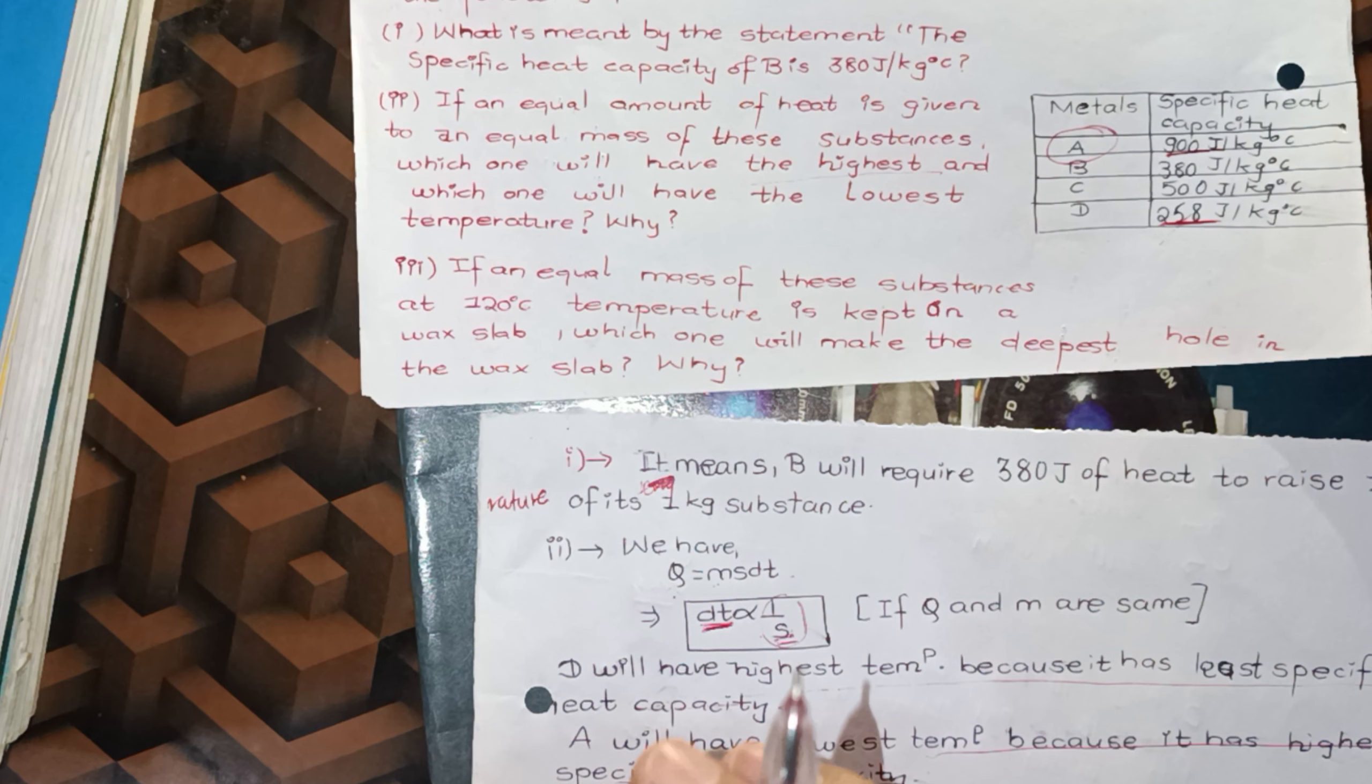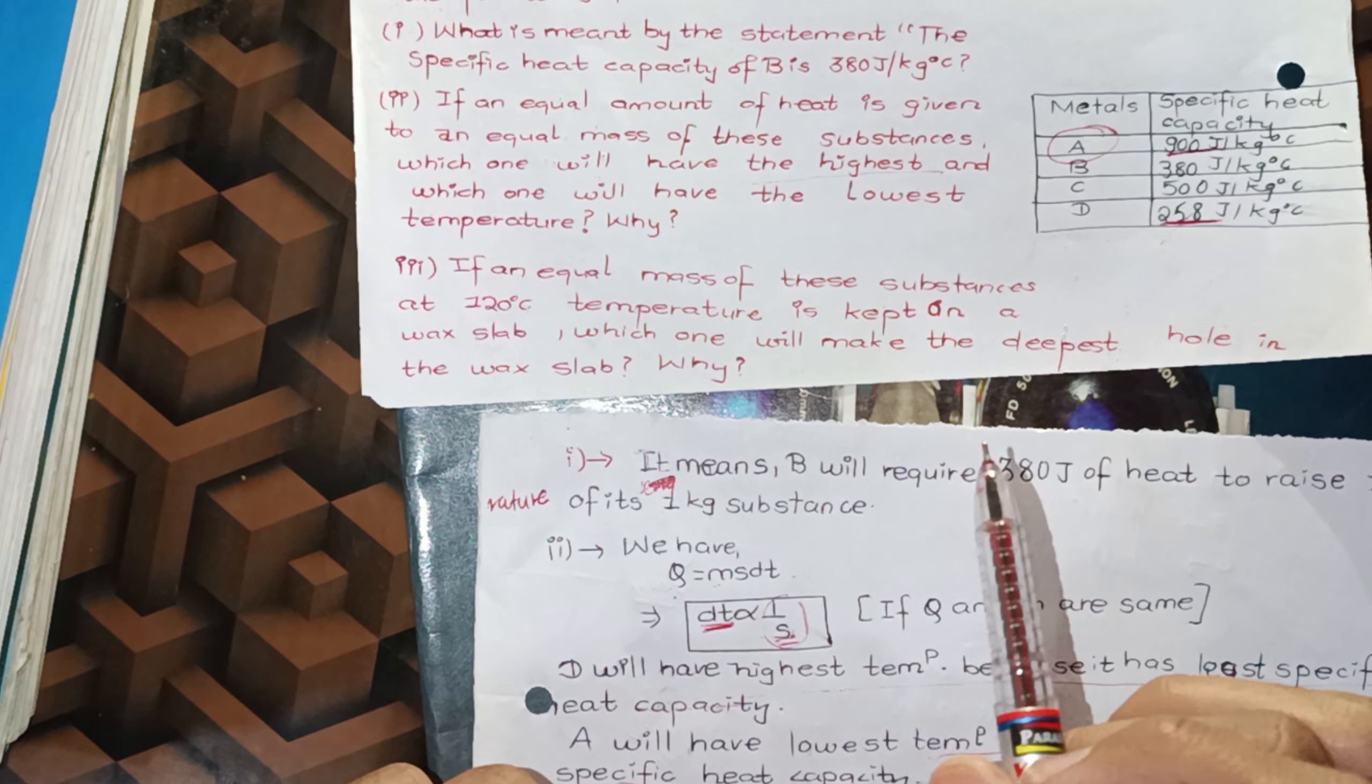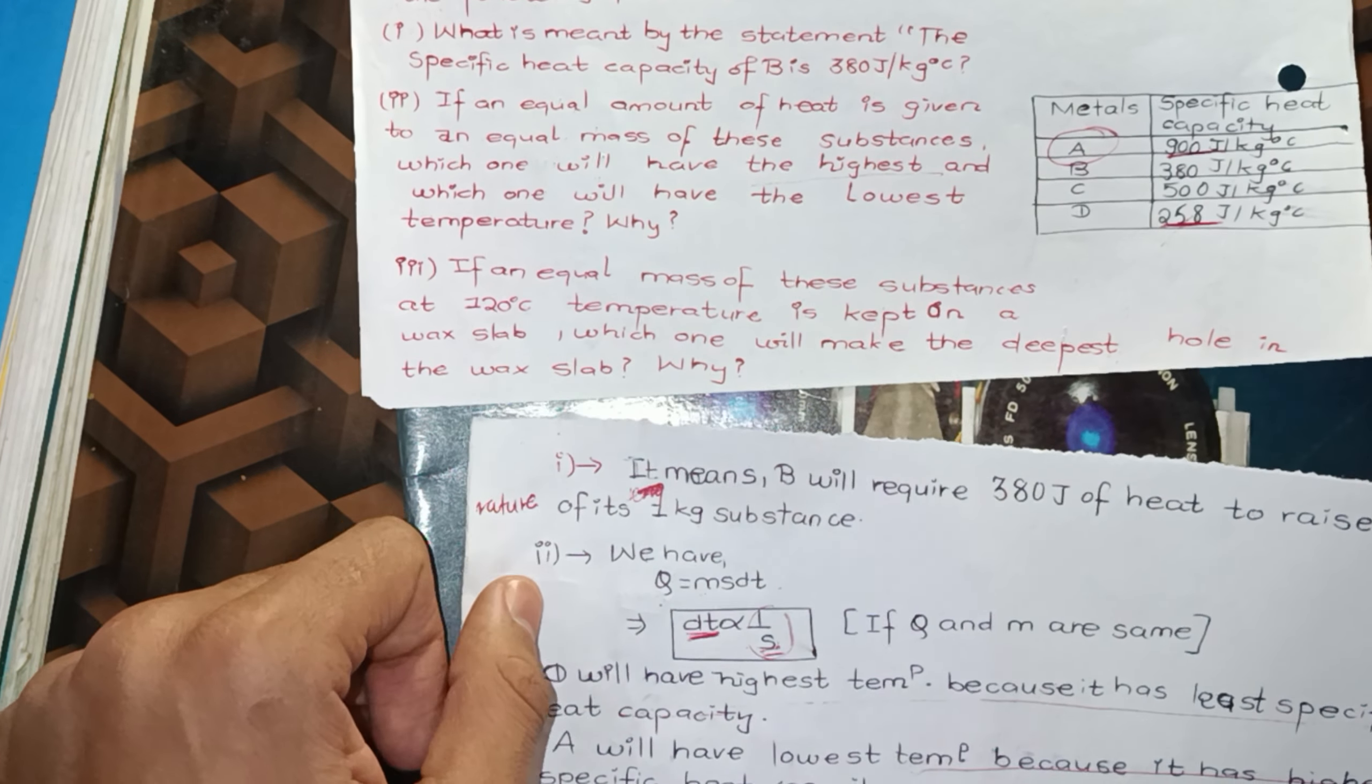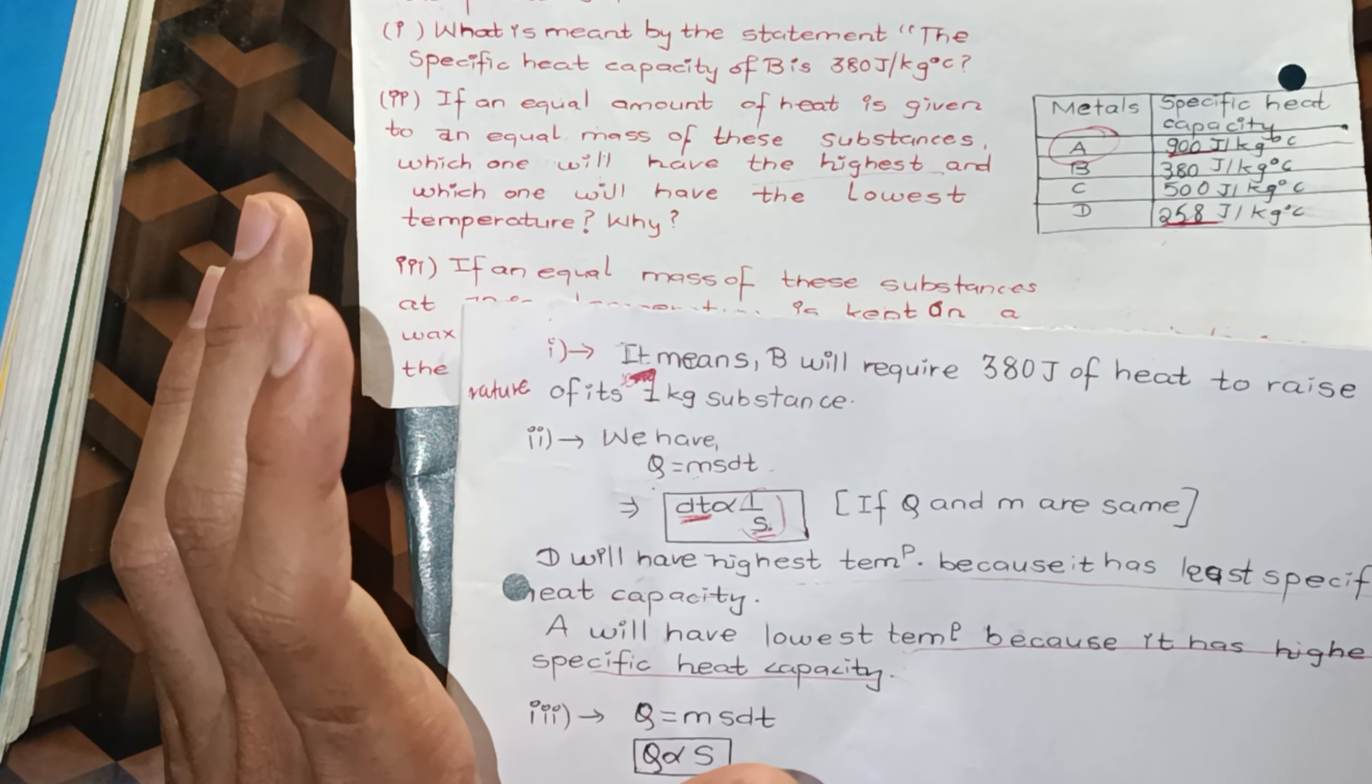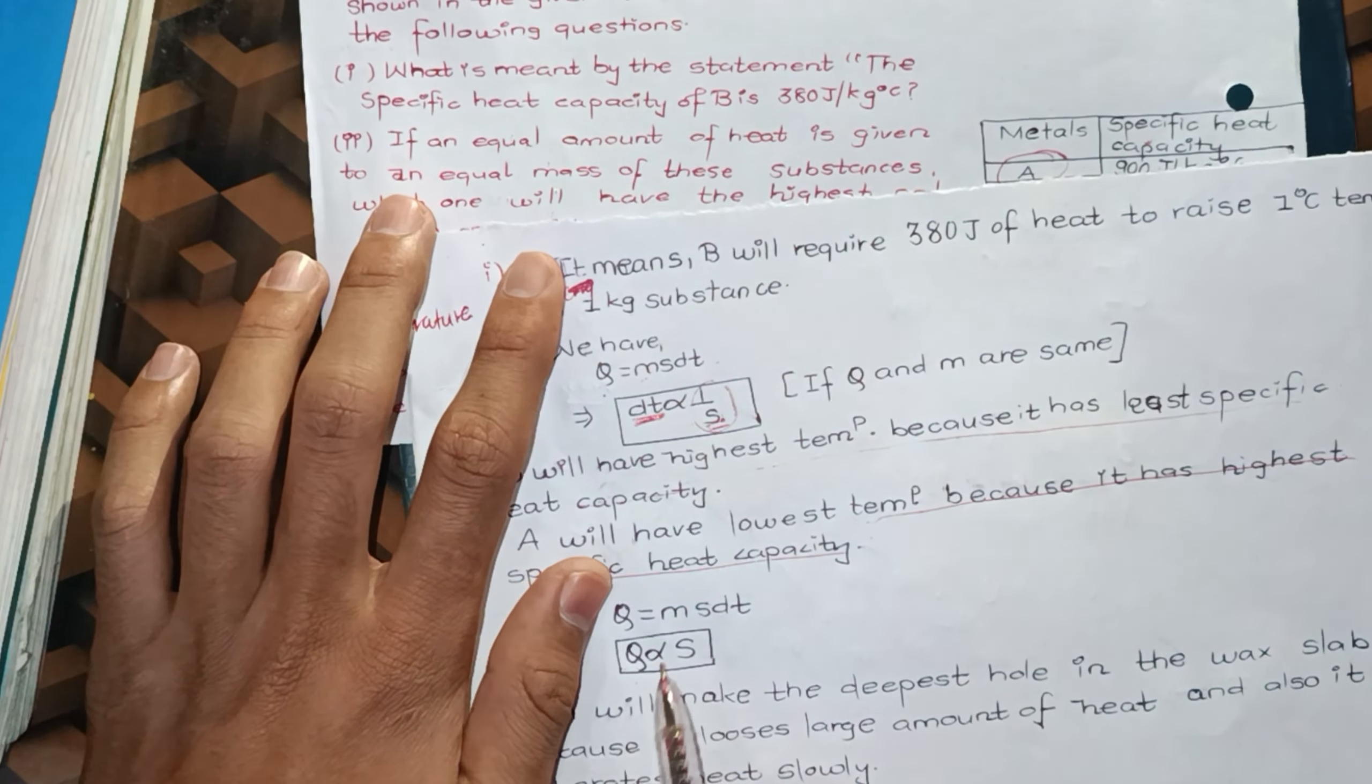This is the question: four substances of equal mass are at 20 to 120 degree Celsius temperature. They are placed on a wax slab. Which one will make the deepest hole?